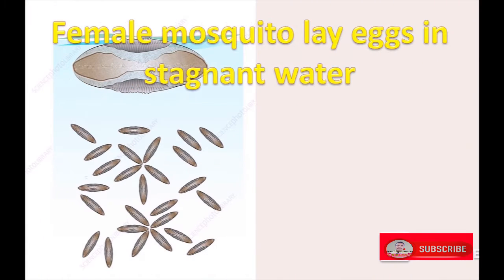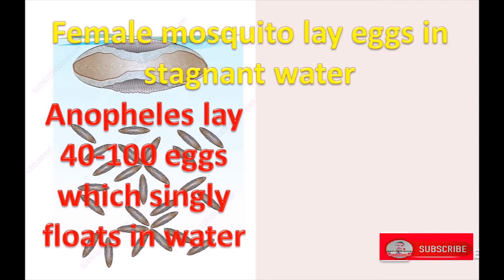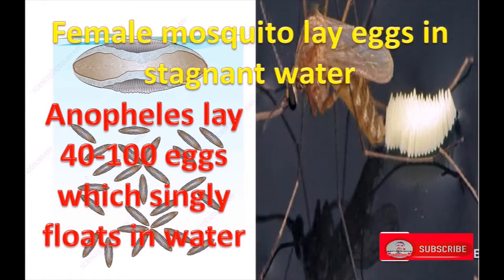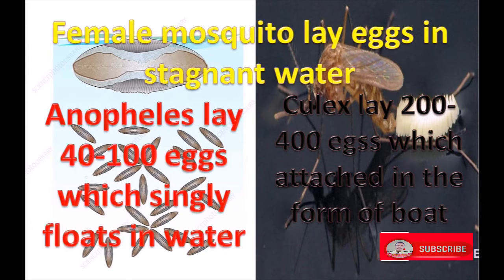Female mosquitoes lay eggs in stagnant water. Anopheles lay 40 to 100 eggs which singly float in water. Culex lay 200 to 400 eggs which are attached in the form of a boat.